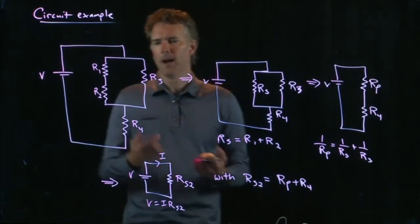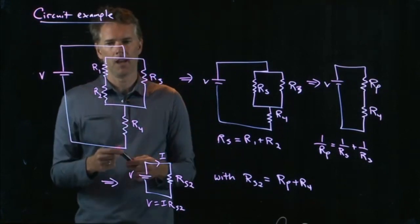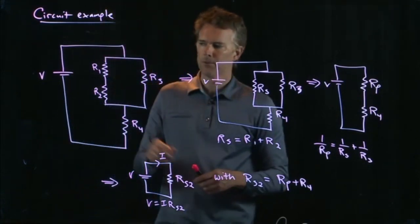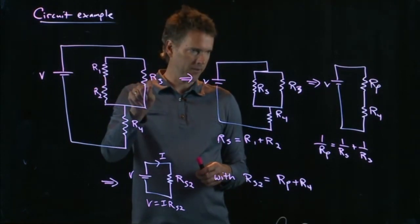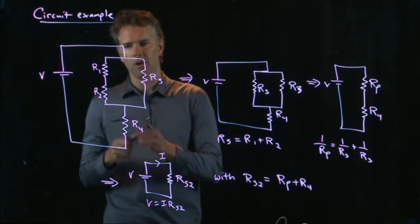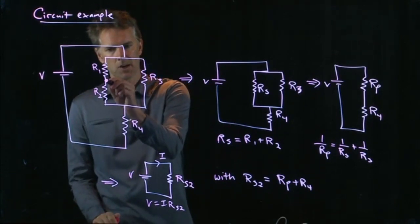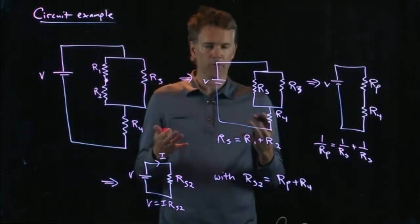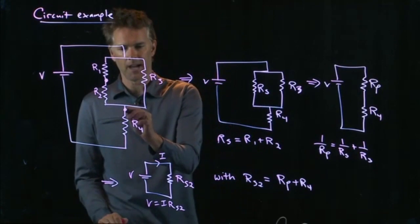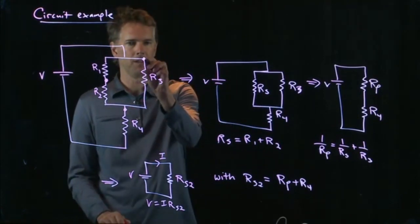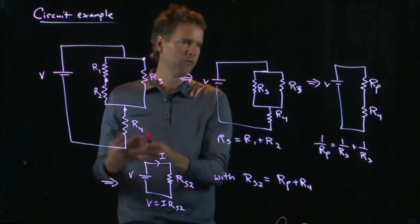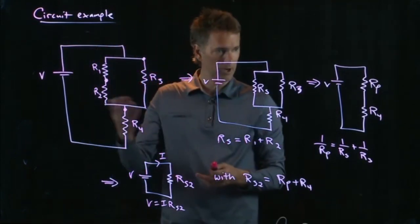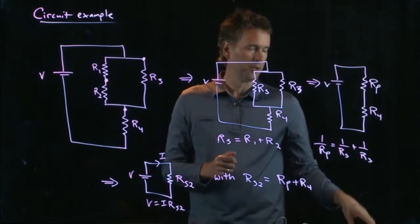And the reason that you might have complicated circuits like that is because you want to be able to supply different voltages to different devices. So there might be some thing that's attached here that needs a different voltage than the thing that's attached here or the thing that's attached there. Okay. So you can do all sorts of complicated voltage divisions as you go when you're building up circuits.